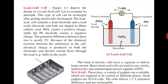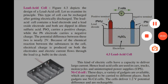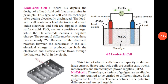Today we studied current electricity. In this chapter, we covered: what is meant by current electricity, electrostatic potential, potential difference, and electric cell. We studied three types of cells: dry cell, lead acid cell, and nickel cadmium cell. If you have any doubt, you can ask me. You have to complete the notes related to this topic in your notebook.